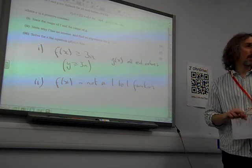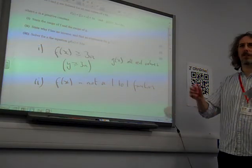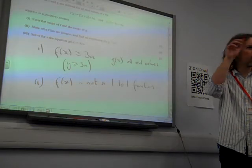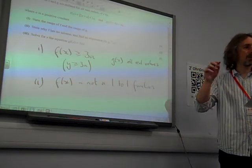So there are, because of the modular sign, there are two x values that give us one y value, aren't there? So it's many-to-one.